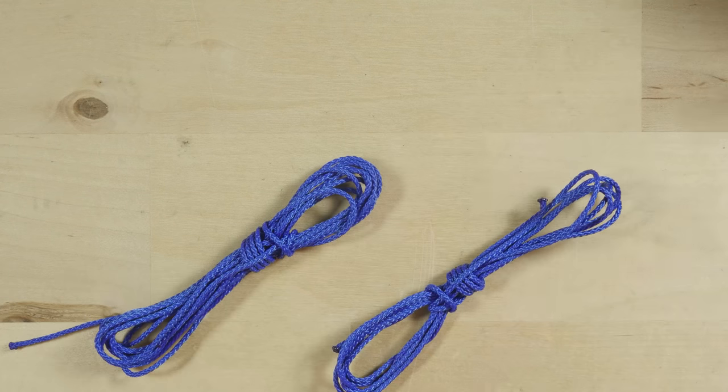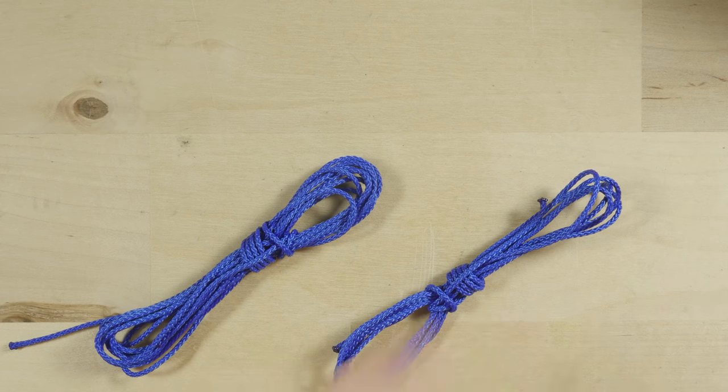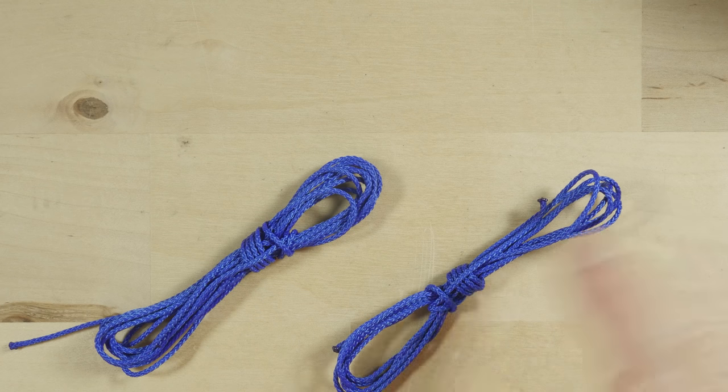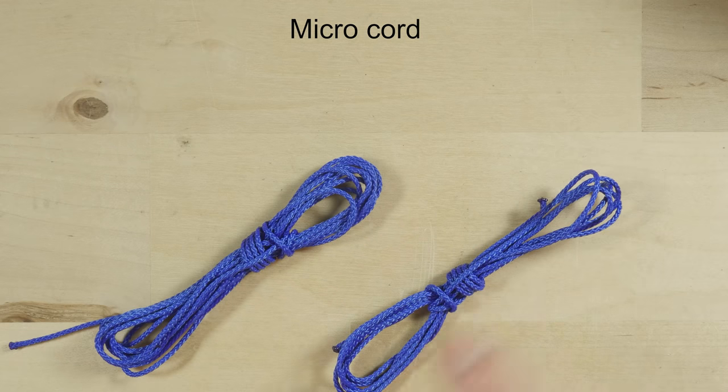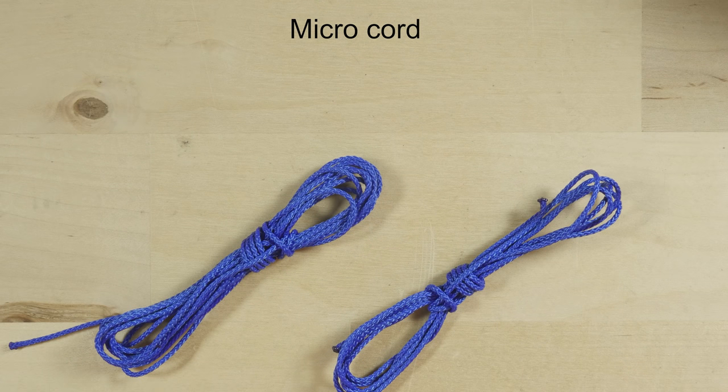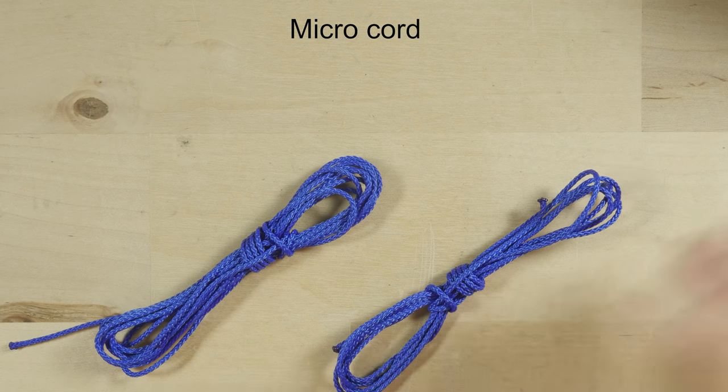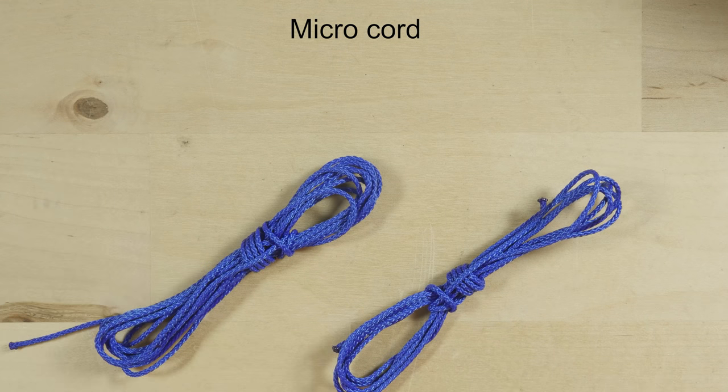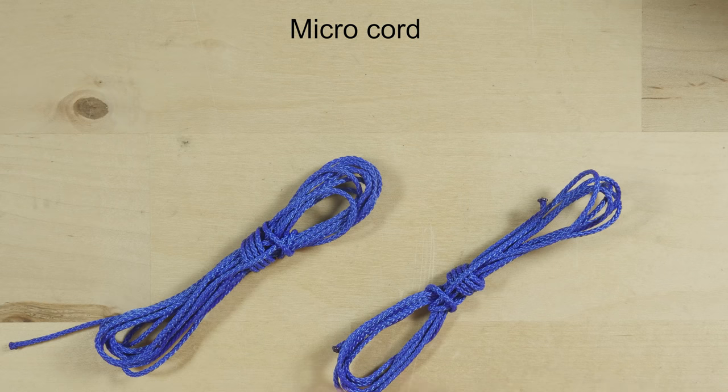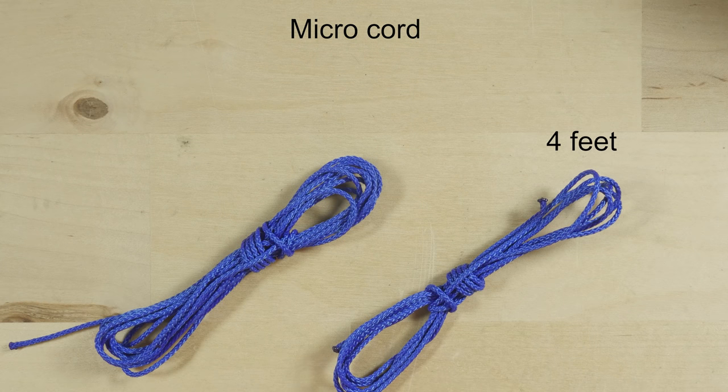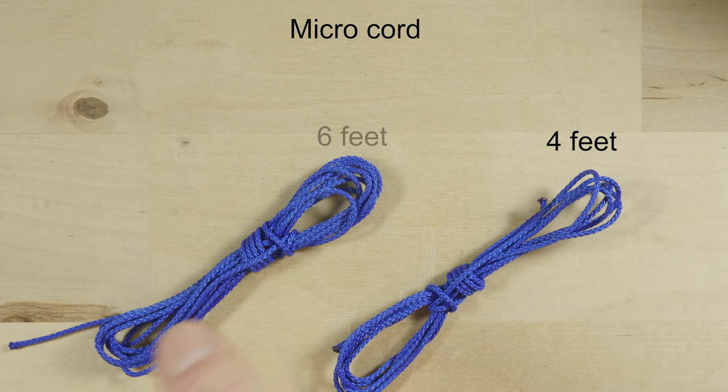Each of these paddies is going to require two pieces of cord. In my case I'm going to be using microchord. Now the length of your cords is really going to depend on the size of the foot wearing the paddies. In my case, one cord is 4 feet long, and the other 6 feet.